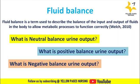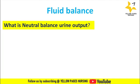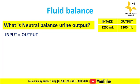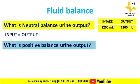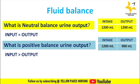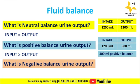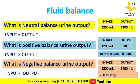Neutral balance urine output: input is equal to output. For example, intake is 1200 ml and output is also 1200 ml. Positive balance urine output: input is greater than output. For example, intake is 1200 ml and output is 900 ml, giving a positive balance of 300 ml. Negative balance urine output: output exceeds input. For example, intake is 1200 ml and output is 1400 ml, giving a negative balance of 200 ml.